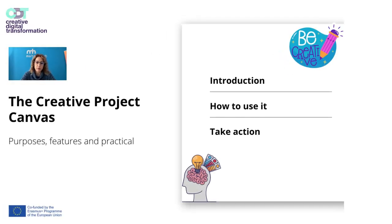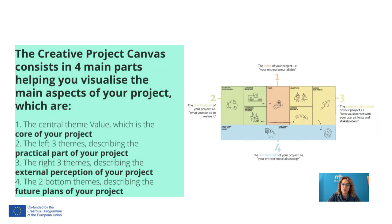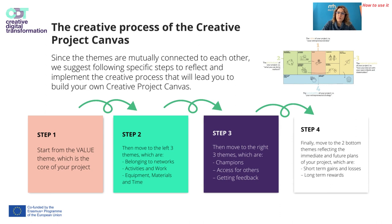Let's explore the purposes, features and practical use of the Creative Project Canvas. It consists of four main parts helping you visualize the main aspects of your project: the central theme of value, which is the core of your project; the left three themes describing the practical part; the right three themes describing the external perception; and the bottom two themes describing the future plans of your project. Since the themes are mutually connected, we suggest following specific steps to reflect and implement the creative process.